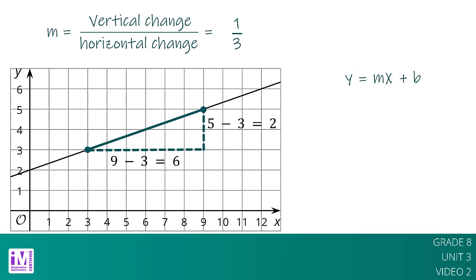We can also see from the graph that the vertical intercept, b, is 2. Putting these together, we can say that the equation for this line is y equals 1 third x plus 2.